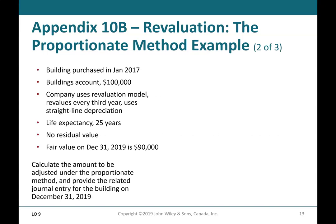Appendix 10B: Revaluation — the Proportionate Method Example (2 of 3). A building purchased in January 2017 has a buildings account balance of $100,000. The company uses the revaluation model, revalues every third year, and uses straight-line depreciation. Life expectancy is 25 years with no residual value. Fair value on December 31, 2019 is $90,000. Calculate the amount to be adjusted under the proportionate method and provide the related journal entry for the building on December 31, 2019.